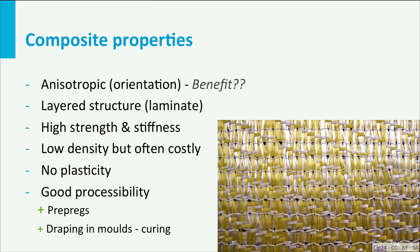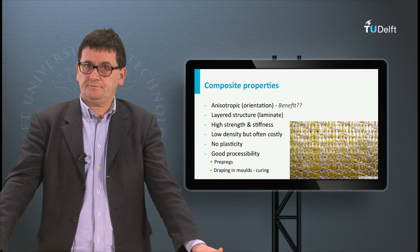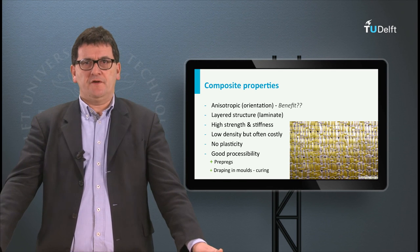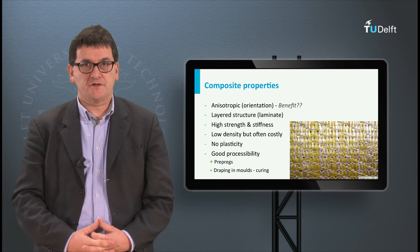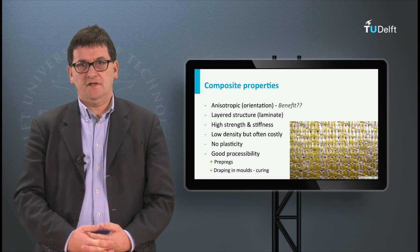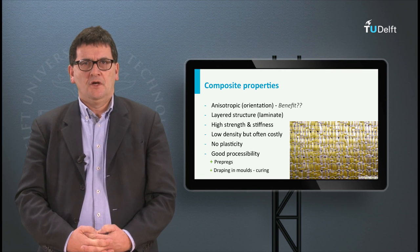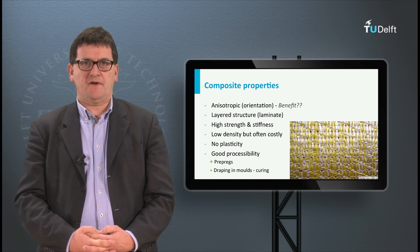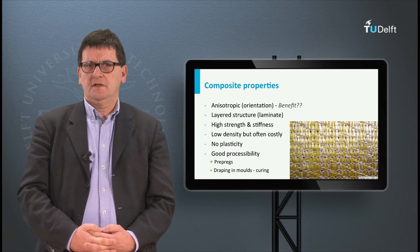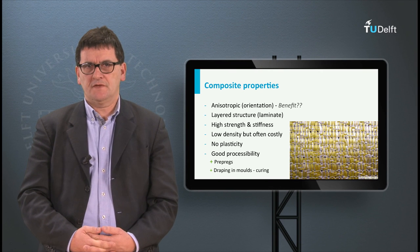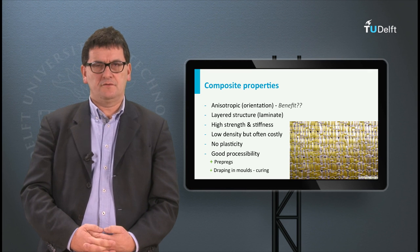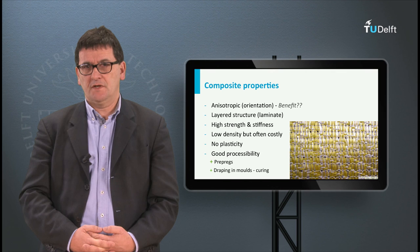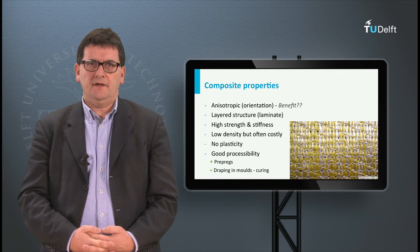Looking at the properties of composites: composites can be highly anisotropic. You may ask whether this is an advantage or a disadvantage — you can use anisotropic behavior to your benefit if the loads on the structure coincide with the fiber directions. This is called tailoring of the composite material. Composites are often layered materials or laminates, and they offer high strength and stiffness in fiber directions. For most composites the density is low, usually in the range of 1500 to 2500 kg per cubic meter.